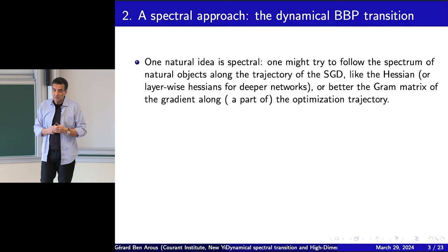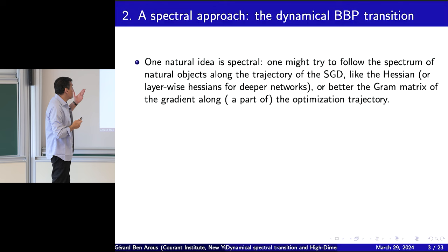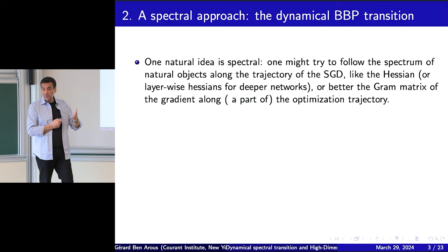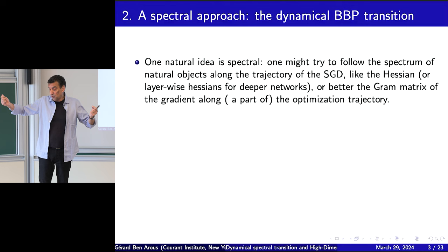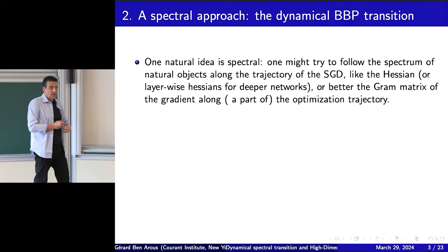If you don't want to compute second-order things, you could look at the Gram matrix — the singular values of the gradient. You take the gradient times its transpose and look at the eigenvalues. This has the advantage of being first order: you don't have to compute the Hessian, and in fact you already need the gradient just to find the trajectory, so this is safer. Why would the Hessian and the Gram matrix have the same spectral structure? Of course there is no reason — these are two very different objects.